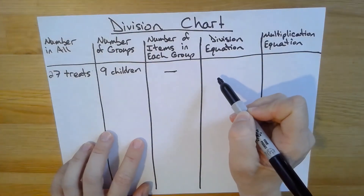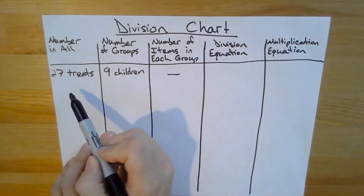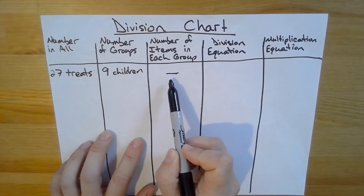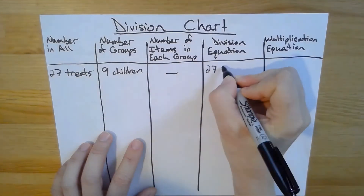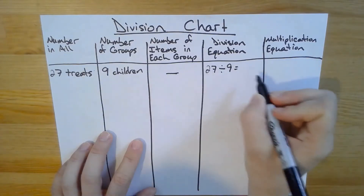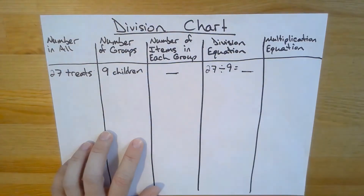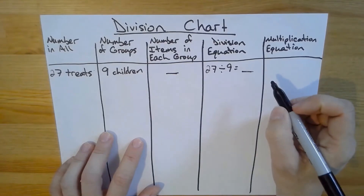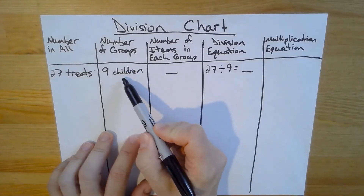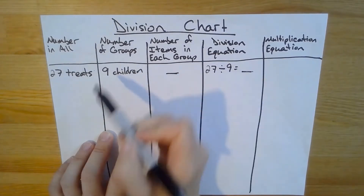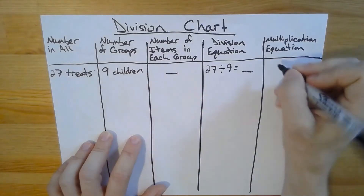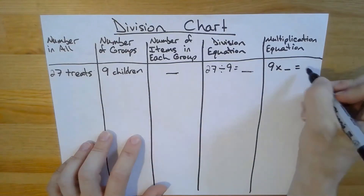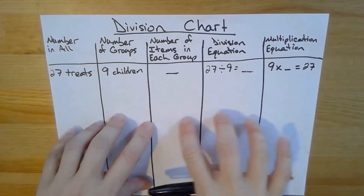My division equation is going to be the problem I'm solving. I have 27 Rice Krispie Treats that I'm splitting equally between nine children, and I'm solving for how many treats each child will get. So my division equation is going to be 27 divided by nine equals blank — that's what we're solving for. My multiplication problem is going to use the same numbers as my division problem, like a fact family. So if I have nine students, that's my groups, times the number in each group which I don't know yet, I will get my total of 27. So nine times blank equals 27. This chart sure holds a lot of useful information in an easy to read way.